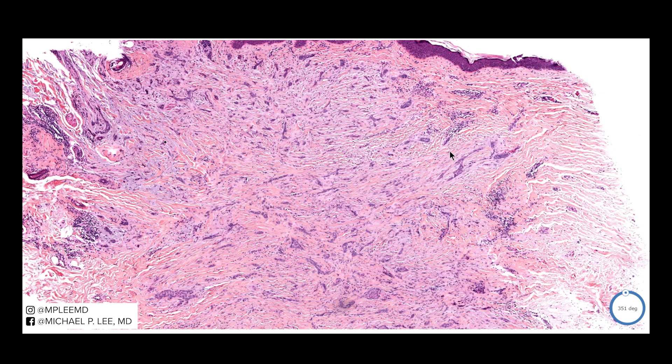BCL2 is another commonly used marker — it will be positive diffusely through the tumor islands of basal cell carcinoma, but only on the periphery of trichoepitheliomas. CK20 and Merkel cell marker are commonly found in trichoepithelialomas but usually negative in basal cell carcinomas.